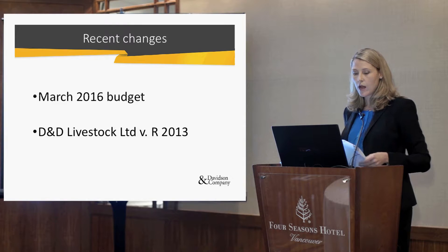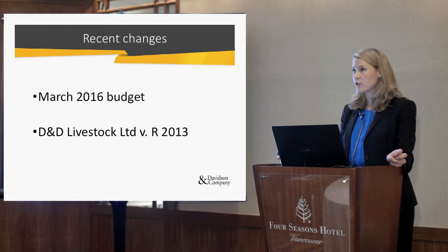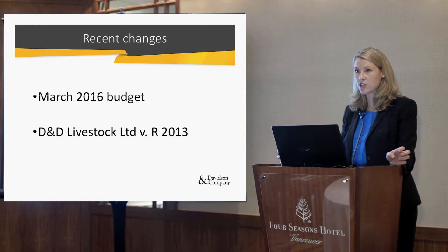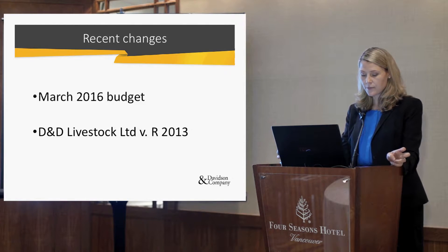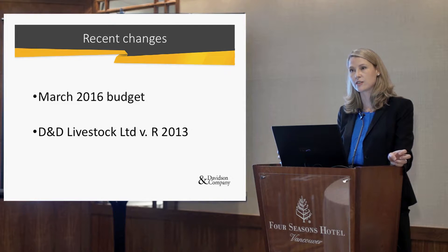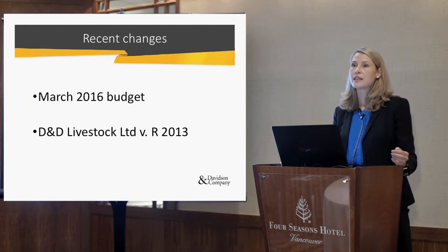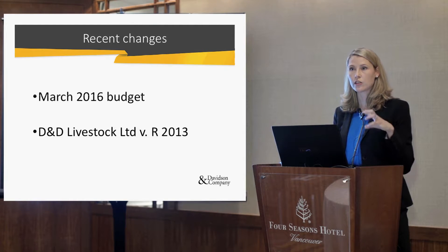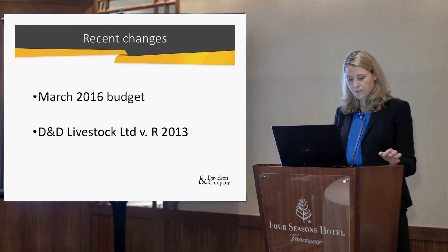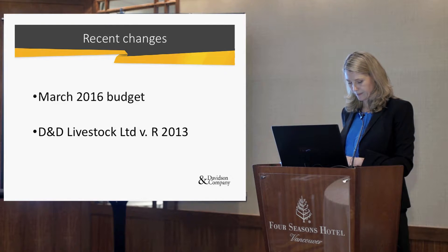The March 2016 budget introduced new rules for intercorporate dividends in reaction to perceived abuse of the previous legislation — for instance, the D&D Livestock case. In that case, the taxpayer reduced the capital gain using a complex set of transactions involving a stock dividend, and by using a combination of other transactions, they ended up using safe income on hand — the tax retained earnings — twice. The CRA obviously didn't like that, so they had to redraft the legislation.